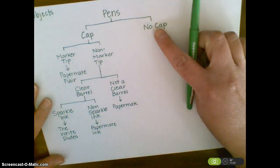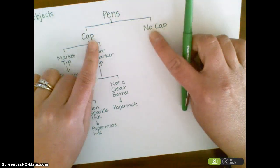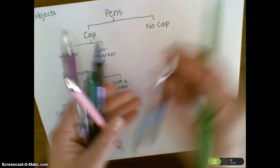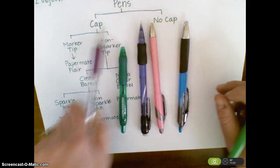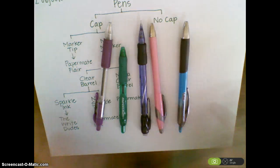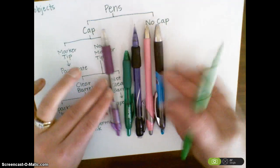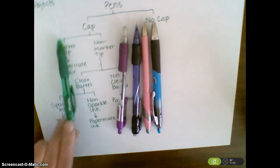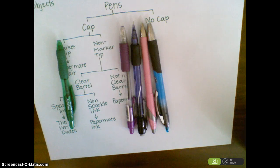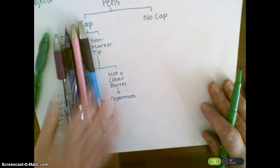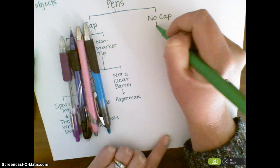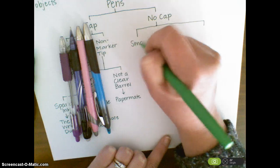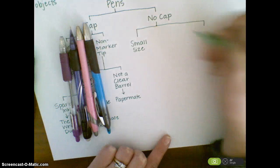Now we're going to work with the other category. Remember at the very beginning we divided all objects into two categories — now pull up all the objects from the second category. Here were all my objects from the 'no cap' category. I notice one pen is a short, stubby pen, so I'm going to put them into two categories: 'small size' and 'regular size' pens.